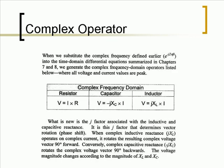When we substitute a complex frequency defined earlier into the time domain differential equations summarized in chapters 7 and 8, we generate the complex frequency domain operators listed below, where all voltage and current values are peak. What is new is the j-factor associated with the inductive and capacitive reactance. It is this j-factor that determines vector rotation, or phase shift.